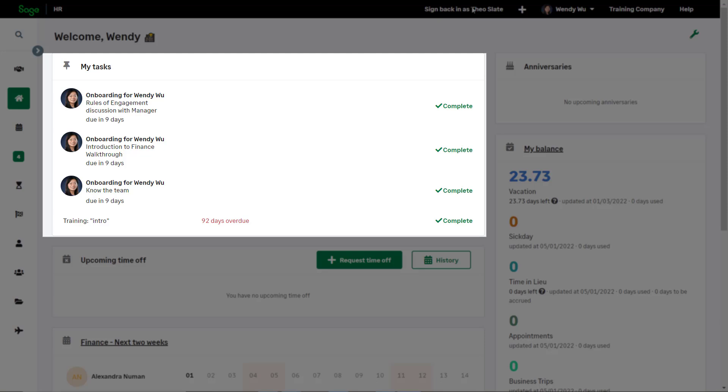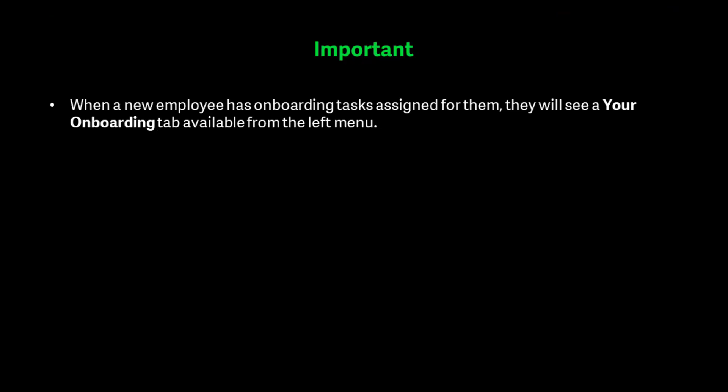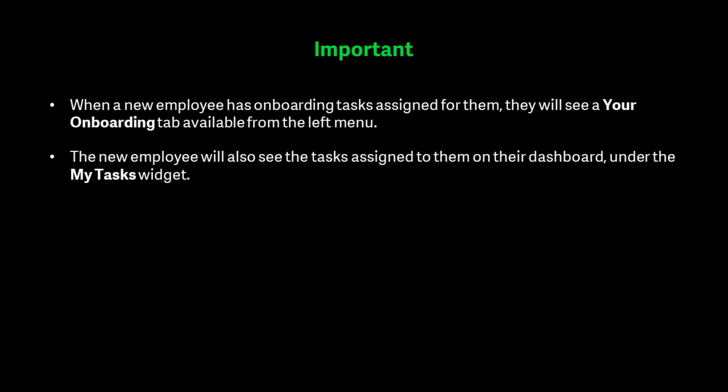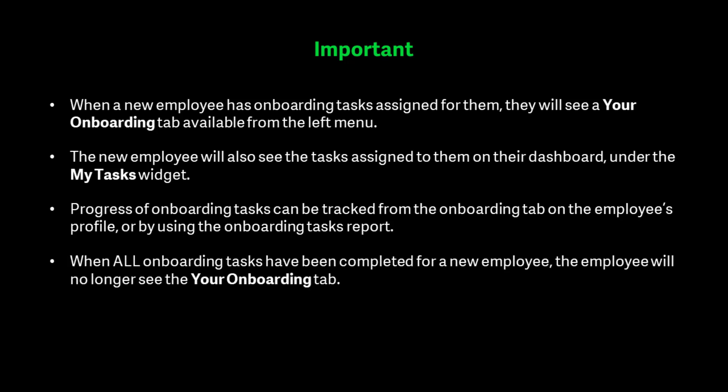The new employee will also see the tasks assigned to them on their dashboard under the My Tasks widget. Anyone else who has tasks assigned to them for the new employee — such as the employee's direct manager — will also see those tasks on their dashboard. Progress of onboarding tasks can be tracked from the Onboarding tab on the employee's profile or by using the Onboarding Tasks report. When all onboarding tasks have been completed, the employee will no longer see the Your Onboarding tab.